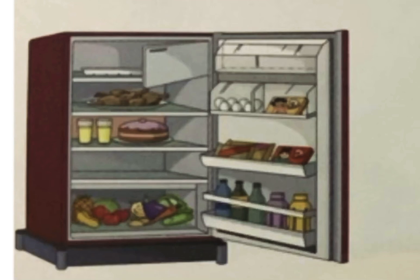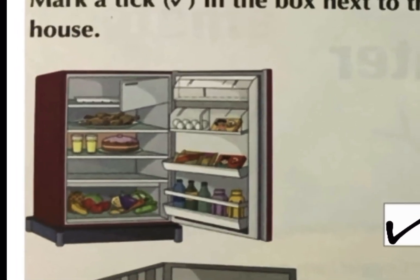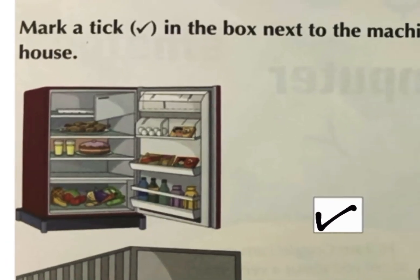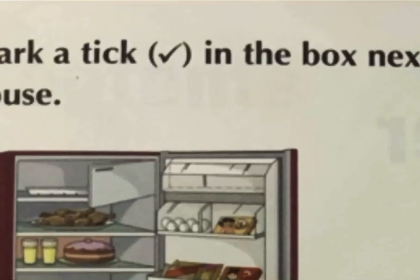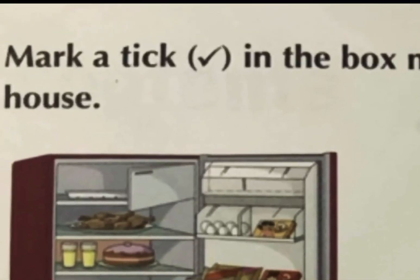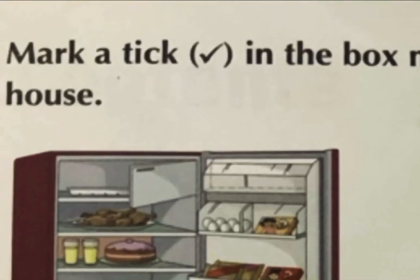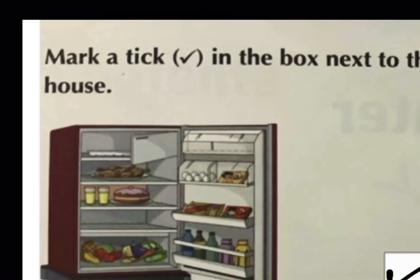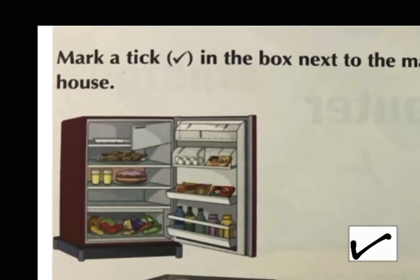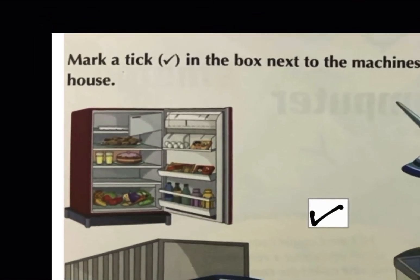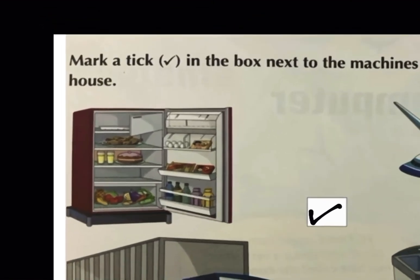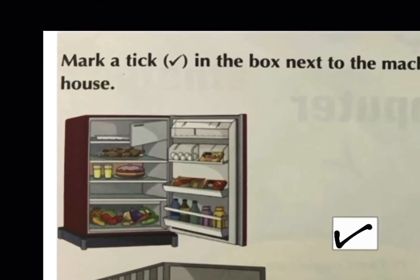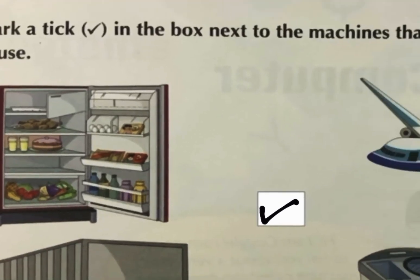Iske aage jo aapko box dekh rha hai, you have to mark a tick. Because in this question we are given to mark a tick in the box next to the image or machine that is found inside the house. Let us see the next one.